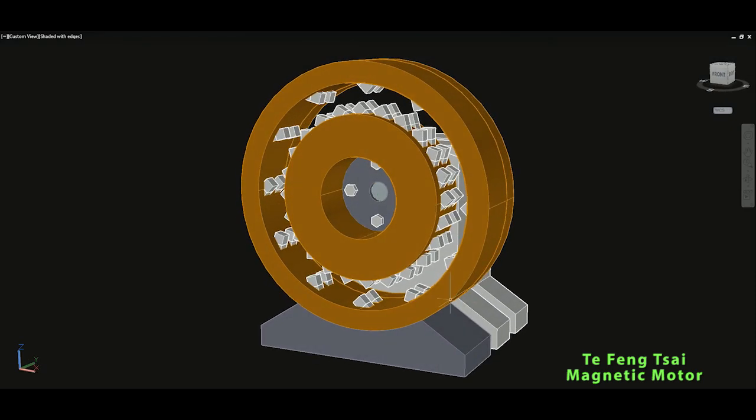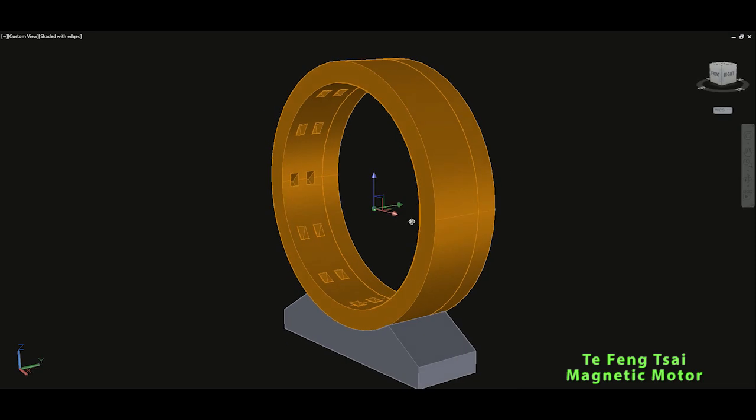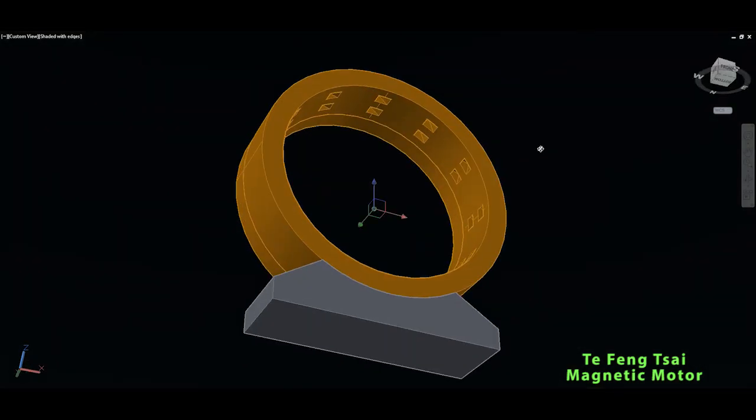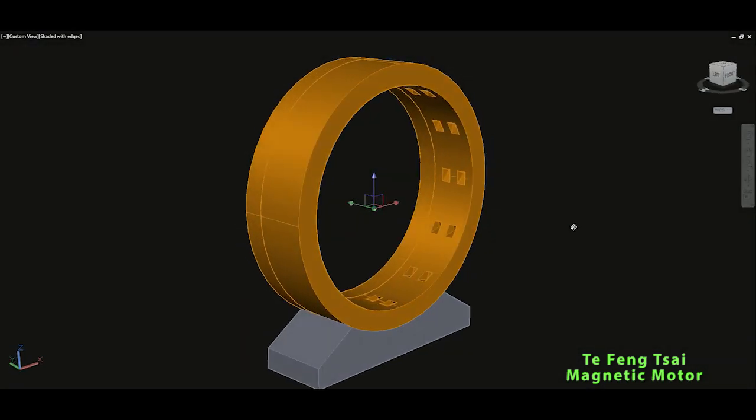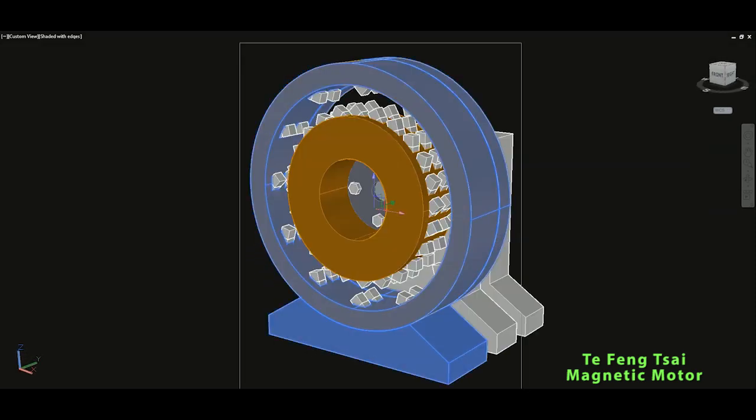As on any other motor, of course we would have the stator. In the stator would be in total 12 magnets in two rows. This is the stator configuration for this magnetic motor.